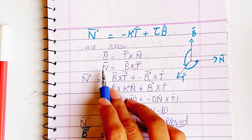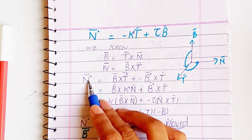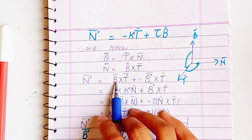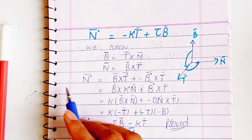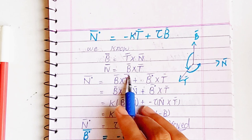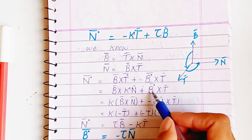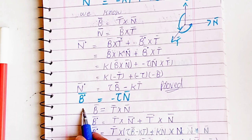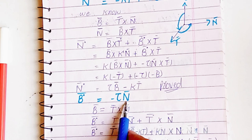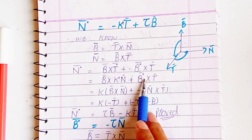Now we will take the derivative of B with respect to S. When we differentiate using the product rule, we put the derivative on the first term and keep the second, then add the second term times the derivative of the first. We have seen the proof for dT/ds. Now we take the derivative of B, which involves kappa and N. The derivative of B is minus torsion into the normal vector.